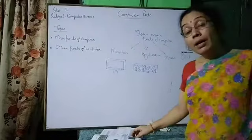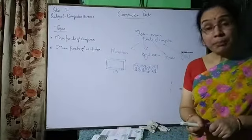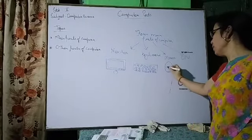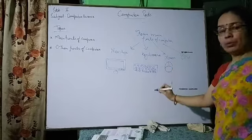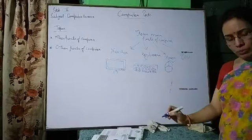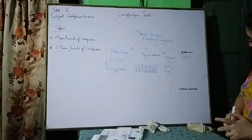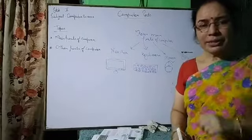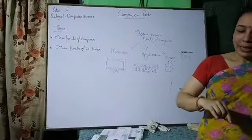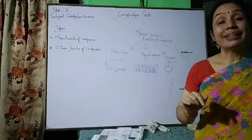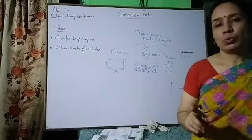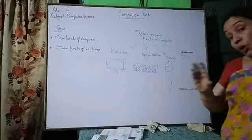Next main part is the mouse. Have you seen a mouse? Why is it called mouse? Because it is very small in size, and it has a long wire like a tail of a mouse. That is why its name is given mouse.